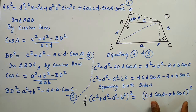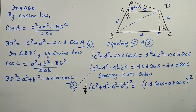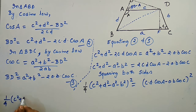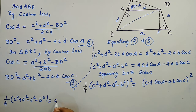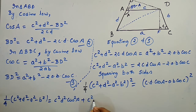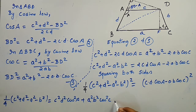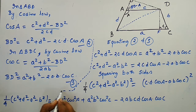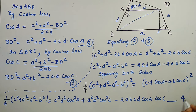Expanding the right-hand side: one-quarter times (C² + D² − A² − B²)² equals C²D²·cos²A plus A²B²·cos²C minus twice A·B·C·D·cos A·cos C. We are naming this equation number 4.